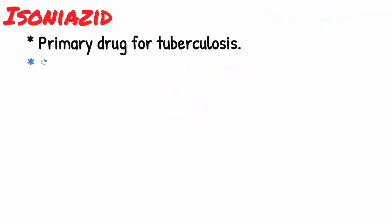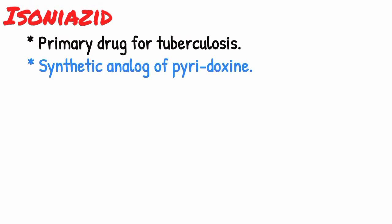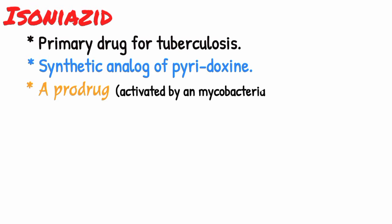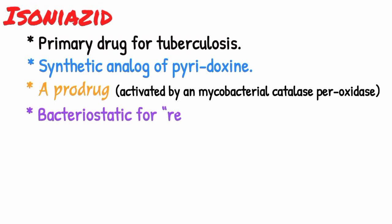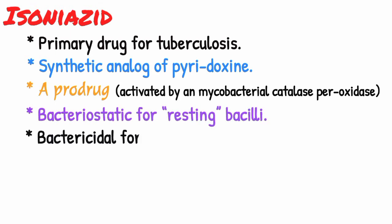Isoniazid remains the primary drug for tuberculosis and it is a synthetic analog of pyridoxin. Isoniazid is a pro-drug that is activated by an enzyme mycobacterial catalase-peroxidase. It is bacteriostatic for resting bacilli, but bactericidal for dividing microorganisms.